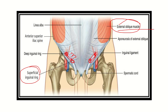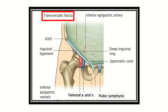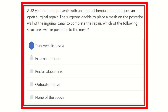On the other hand, the deep inguinal ring is located in the deep part. Here we can see the deep inguinal ring, and the posterior boundary of this deep inguinal ring is the fascia transversalis, which forms the posterior wall of the inguinal canal. So the mesh will be placed on the posterior wall, which is the transversalis fascia. Therefore, the fascia transversalis forms the posterior wall of the inguinal canal, and the mesh should be placed on this posterior wall.